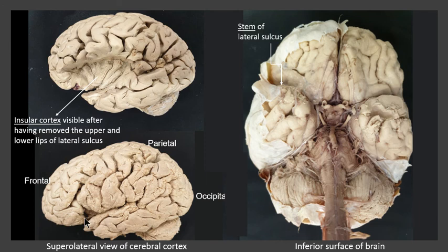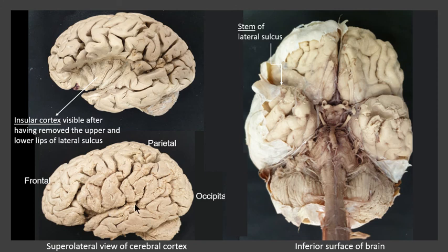Consequently, because of these rami, the cerebral cortex gets split up into different gyri or regions, and they have their own specific names. For instance, the part of the frontal lobe which is underneath the anterior horizontal ramus is known as pars orbitalis. Then in between the anterior horizontal ramus and the anterior ascending ramus, this triangular region is the pars triangularis. And behind the anterior ascending ramus and above the posterior ramus, this region is known as the pars opercularis.